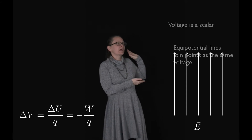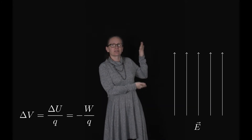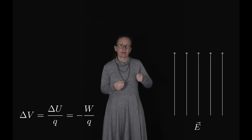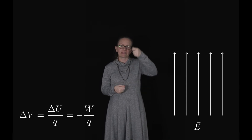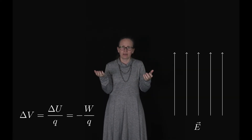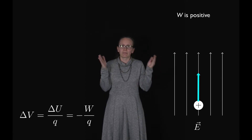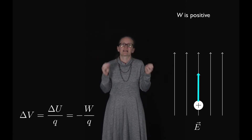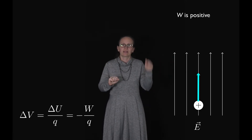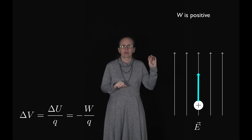Imagine a constant electric field. If we imagine moving a positive particle in the same direction as the field, we know that we're doing positive electrostatic work on the particle — that is, the electric field is doing work on the particle.